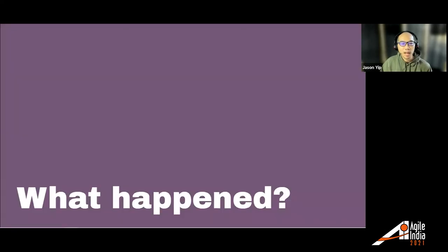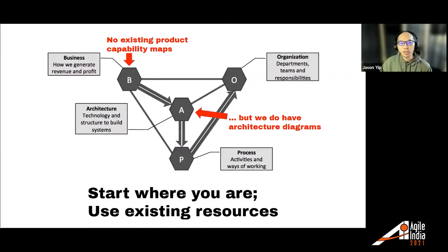So what actually happened? Right from the start, when I was introducing this, I didn't really have enough context in the business strategy to say, 'here is our current product strategy, and therefore this is what architecture should look like, and so on.' So I could only really use pre-existing artifacts — we didn't have anything like a product capability map.